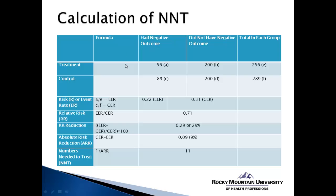Looking at the data, let's say we have a treatment designed to prevent stroke. Of the people who had the negative outcome — who actually had a stroke — 56 were in the treatment group and 89 were in the control group. Of subjects who did not have a stroke, there was equal distribution between treatment and control. Just from this raw data, the control group appears more likely to have a negative outcome, but we can quantify that difference as we work through our calculations.